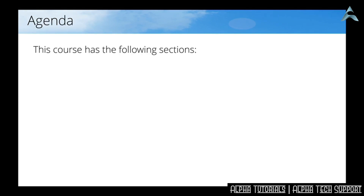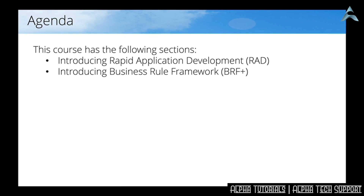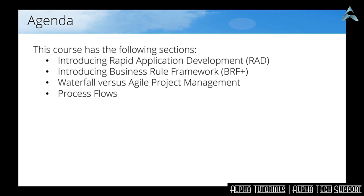This training course has the following sections: an introduction to rapid application development, followed by an introduction to the Business Rule Framework, then an overview of the differences between waterfall and agile project management. After that, I'm going to show some process flows — not completely end-to-end flows, but only the part of the process that is of interest for this training course.